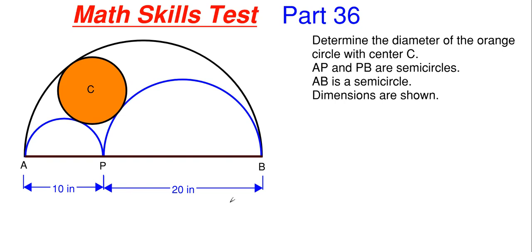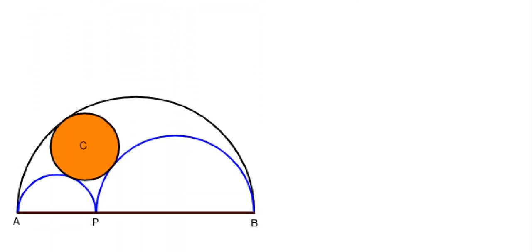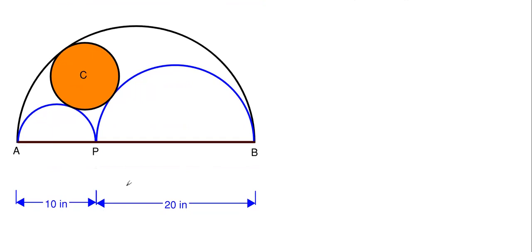To solve for the diameter of circle C, we're going to draw in some extra pieces of information. We'll connect all centers of the three semicircles to the center of circle C. The first center I'll call X, the second center for the P-to-B semicircle I'll call Z, and the third center for the largest semicircle I'll call Y.